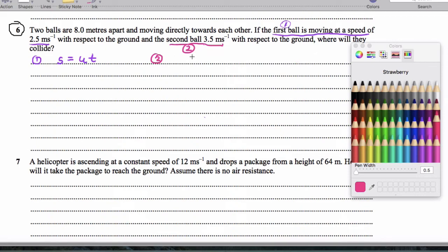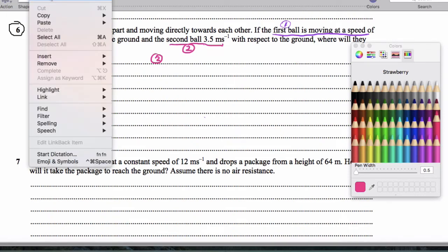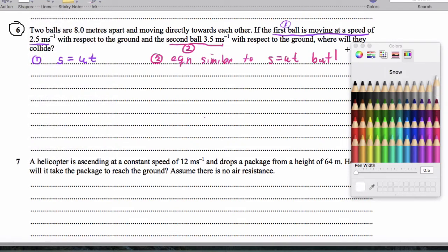So here's the idea for number two. It also has an equation similar to S equals UT, but the problem is it goes in reverse and starts at 8.0 meters. So for the ball on the left, we can say S is 2.5 times T. That's the equation that describes its motion.